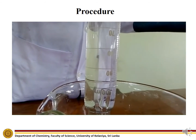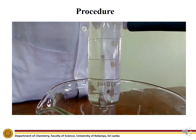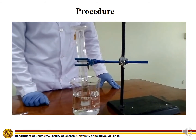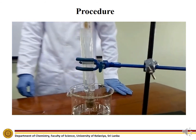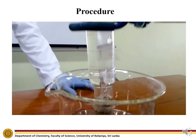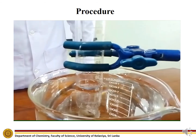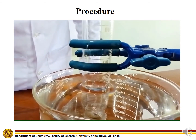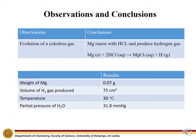The HCl contacts the metal and the evolved gas is collected in the inverted cylinder. When the levels of water in the cylinder and beaker are equalized, the volume of the gas is measured.